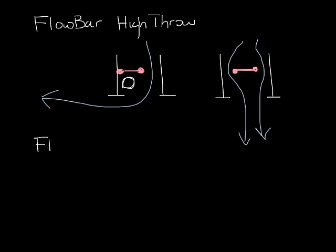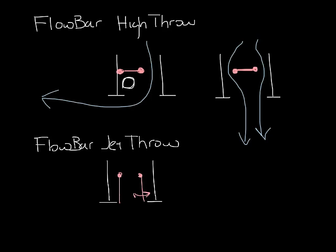Now there's another type of flow bar called the flow bar jet throw. It has a different pattern controller in it and it looks something like this. So it has two pattern controllers that kind of pivot back and forth on the inside of the flow bar frame.